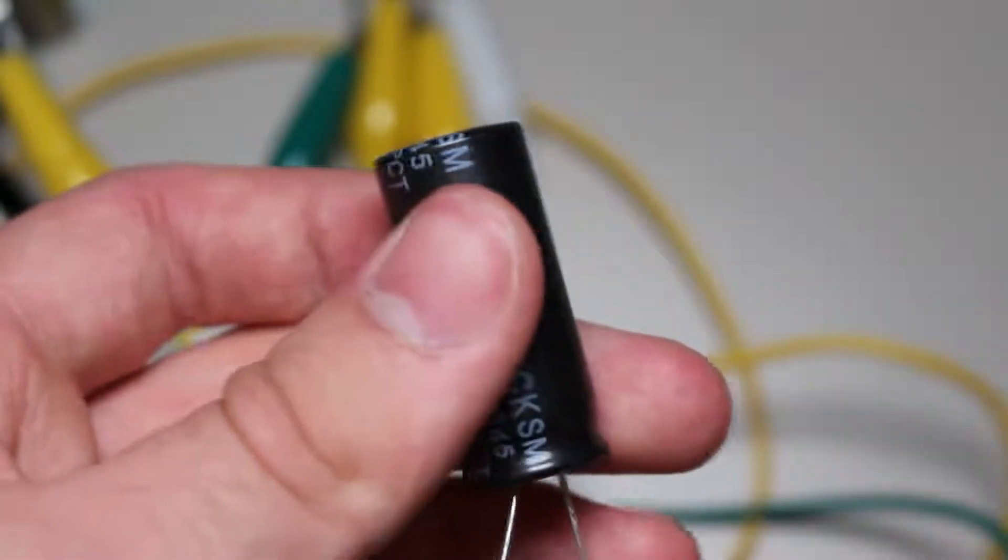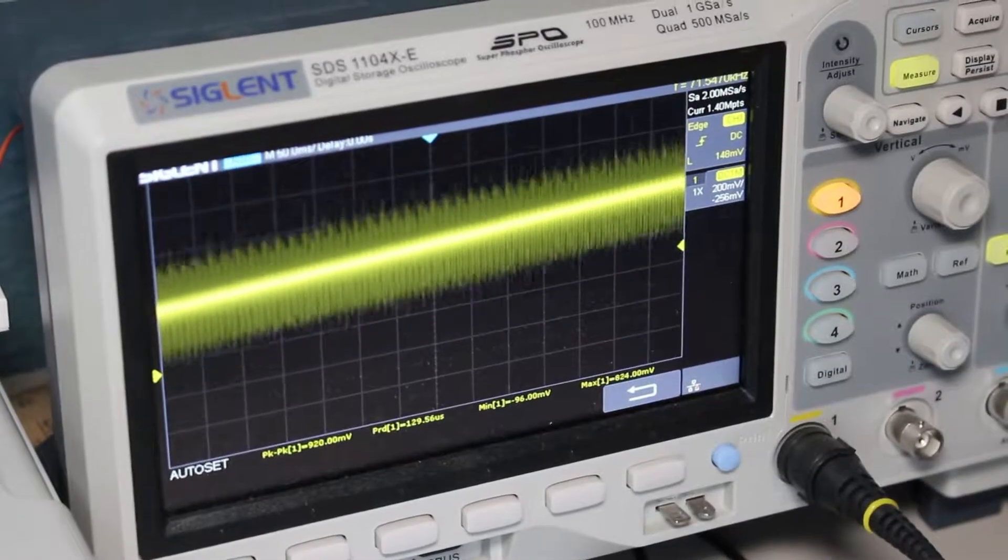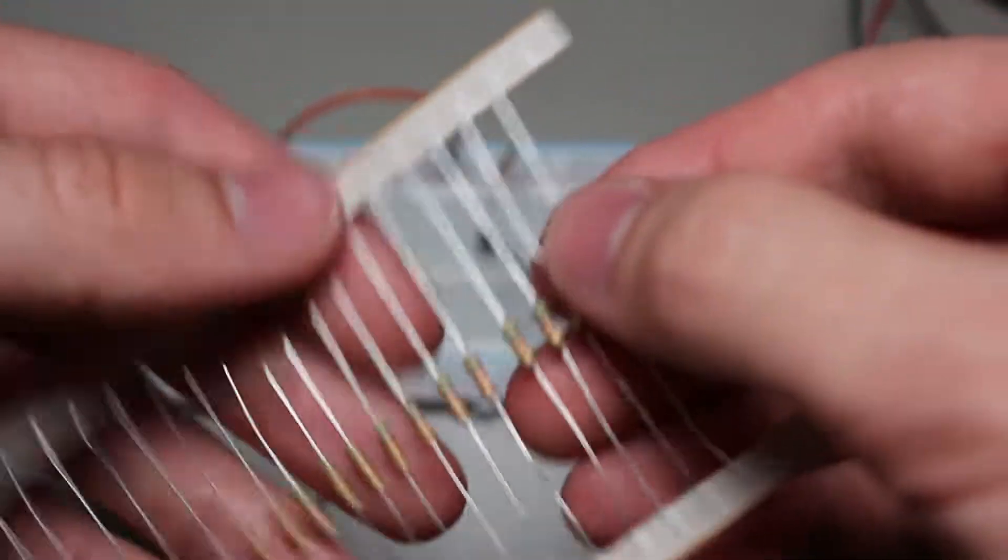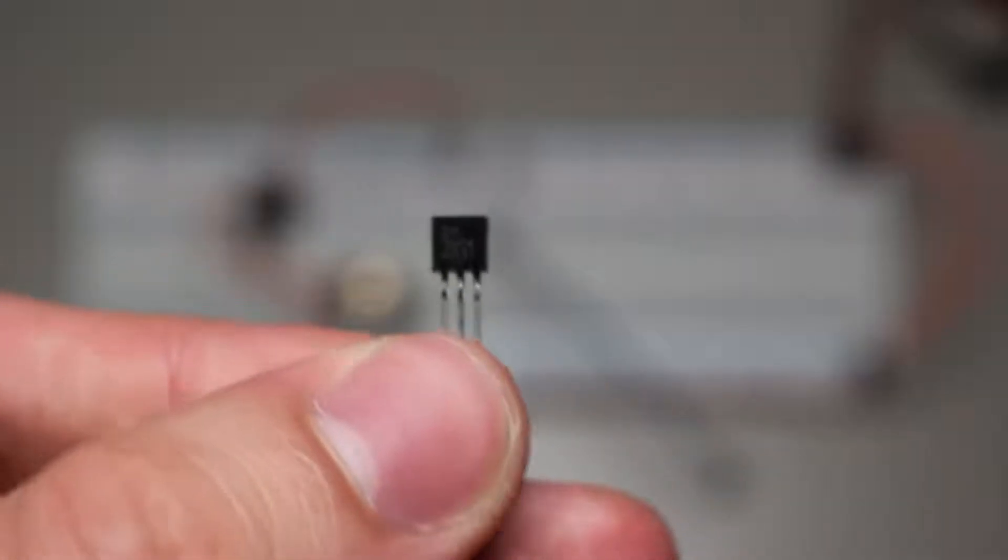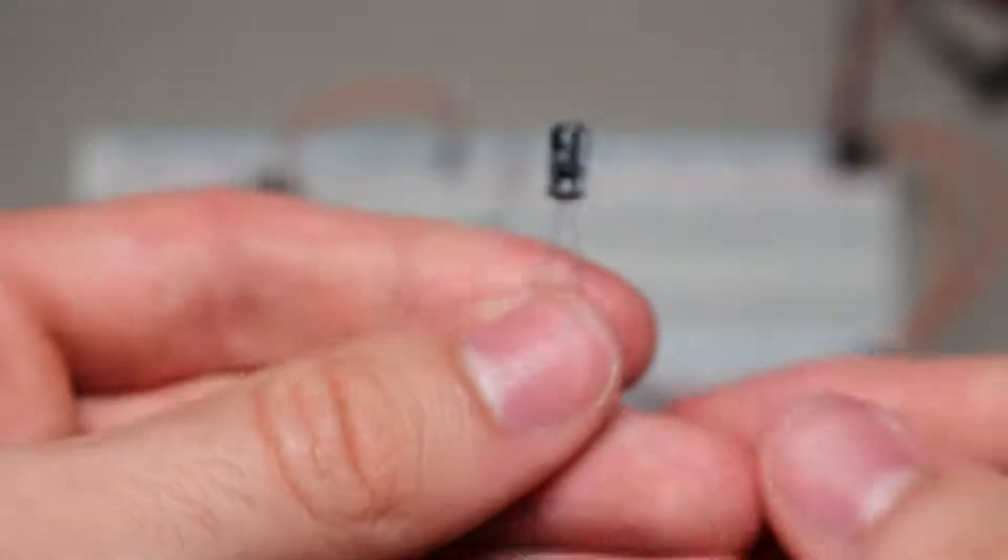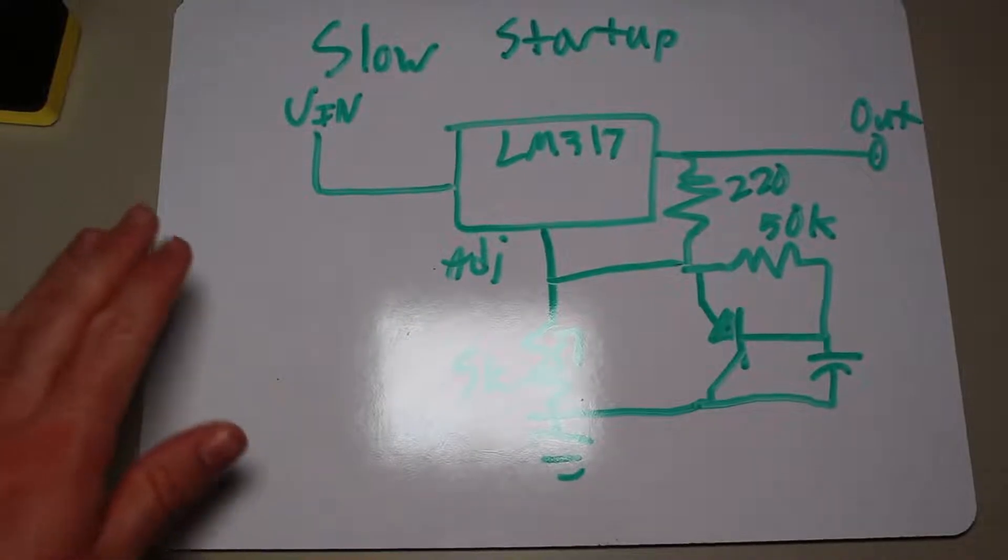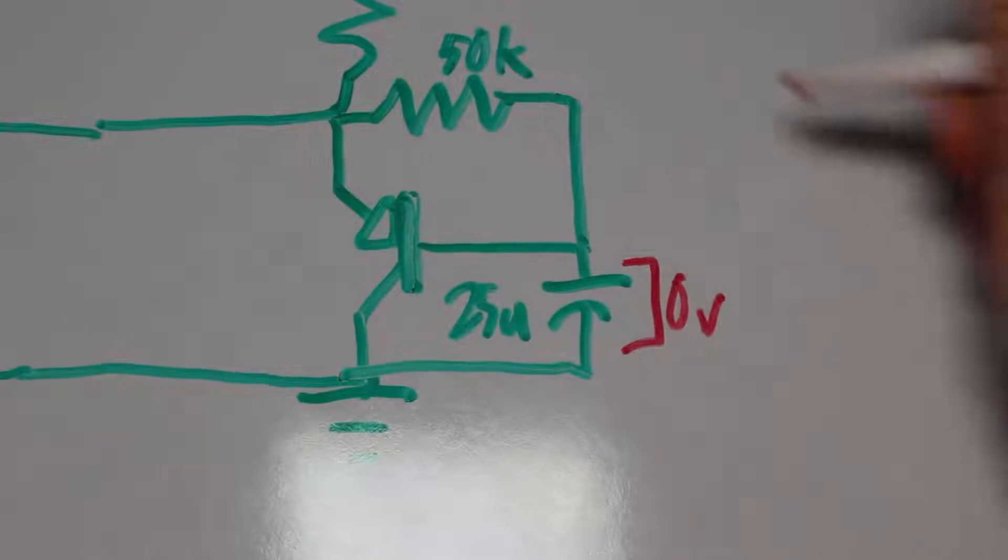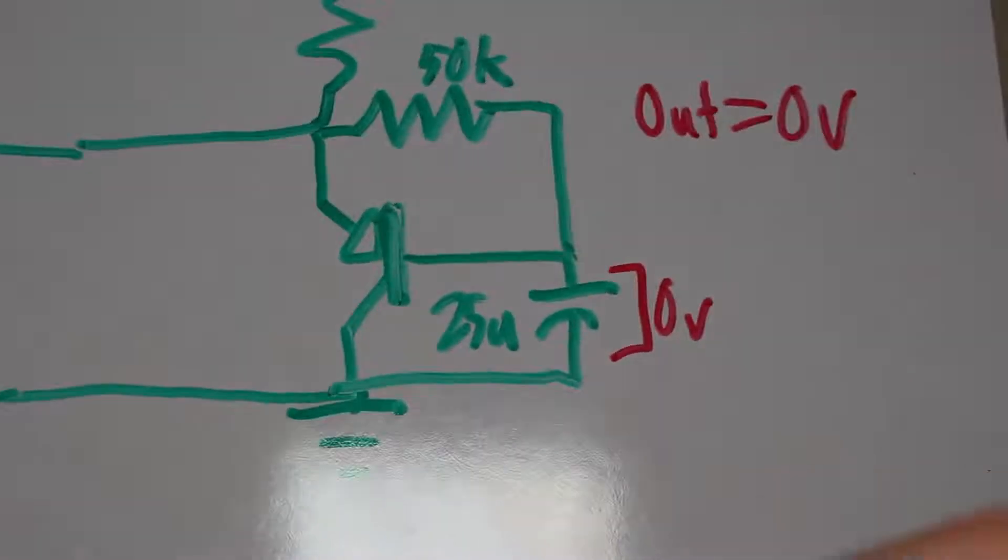Luckily, we can use just three more components to allow us to slowly ramp up the output voltage on the LM317. And these three components are a 50 kilo-ohm resistor, a PNP transistor, and a 25 microfarad capacitor. When we first start the circuit, the capacitor is completely discharged, so the PNP transistor will be on and pulling the adjust pin to zero volts.